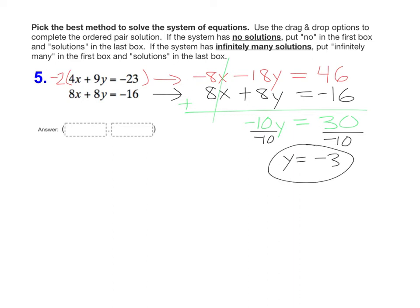To finish it up now, we need to find the second value, we need to find x. You can choose either of the two original equations, pick whichever one looks easiest to you. It doesn't matter which one you pick. I'm going to pick the second equation, eight x plus eight y. Well, we just found y was negative three, so eight x plus eight times negative three should equal negative sixteen.